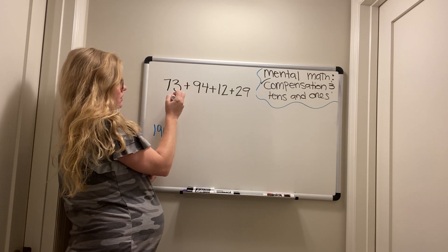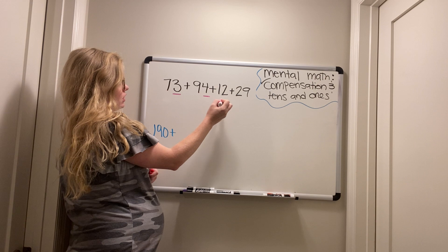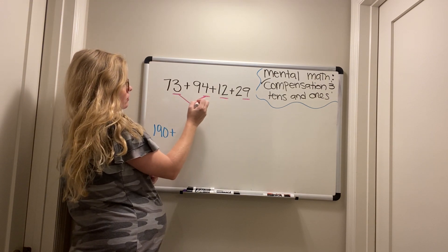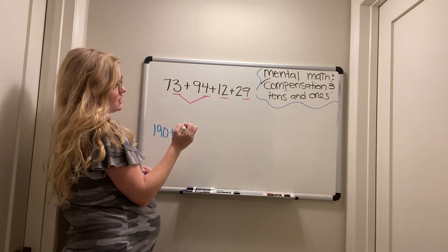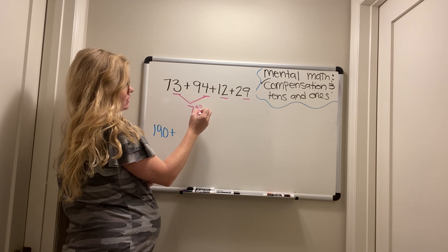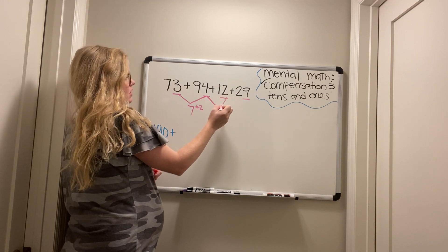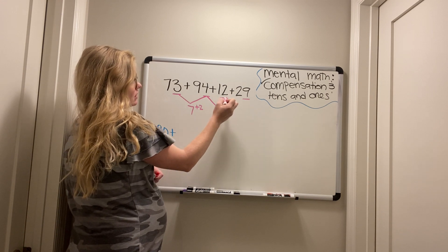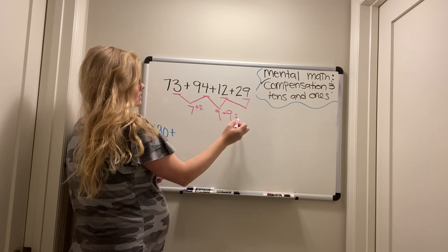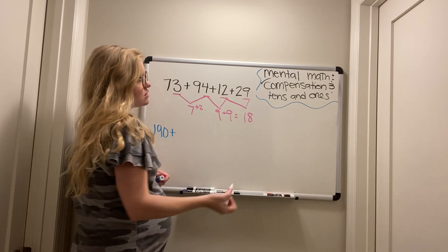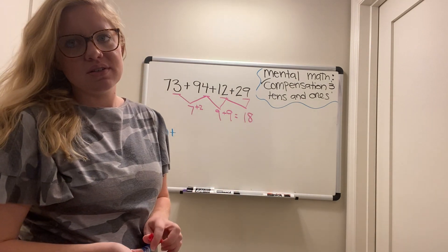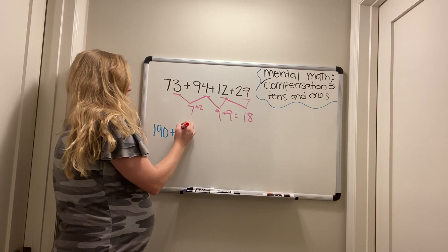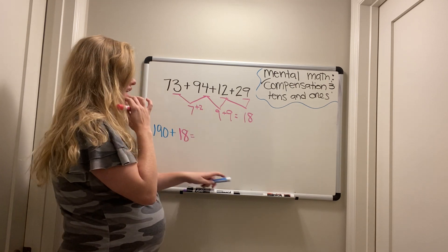All right. So we've taken care of our tens for now. Three, four, two, and nine. Three and four make... Three plus four is seven. Good. Seven plus two is nine. Good. Nine plus nine is eighteen. So since they're ones, we don't need to say eighteen tens. It's just eighteen. So one hundred ninety plus eighteen equals what? Good.